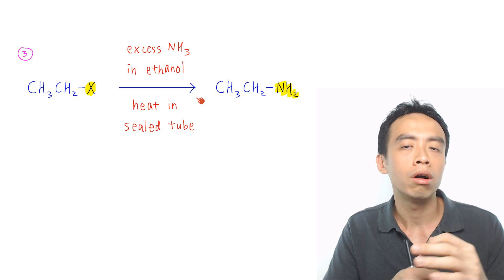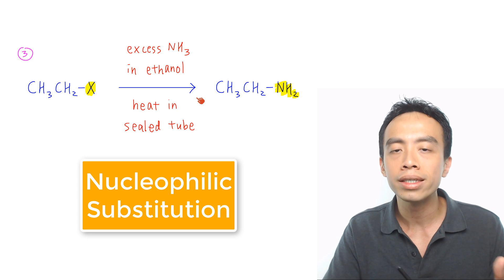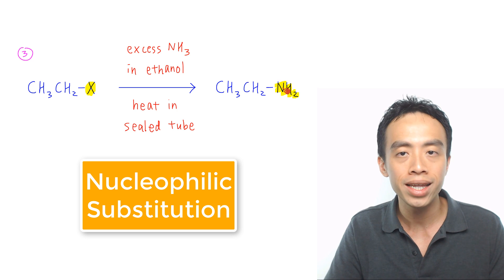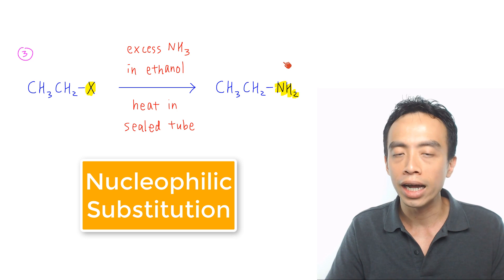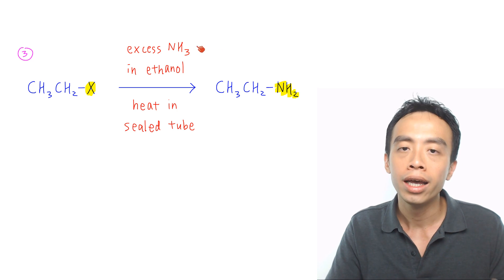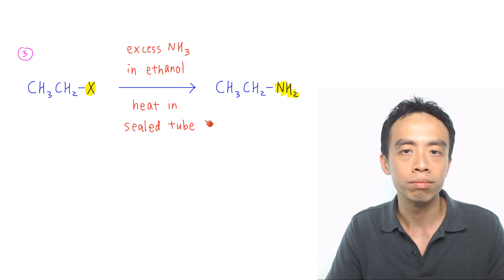Must-know reaction number 3 of alkyl halides is the nucleophilic substitution to form our amine. This is done using excess ammonia in ethanol, heat in a sealed tube.